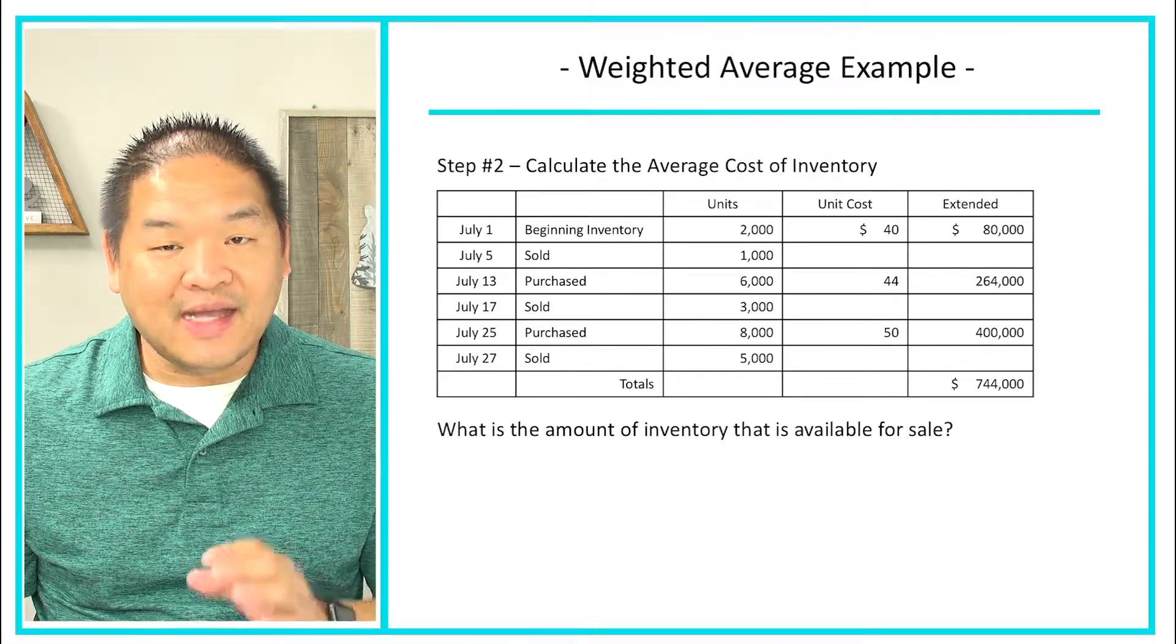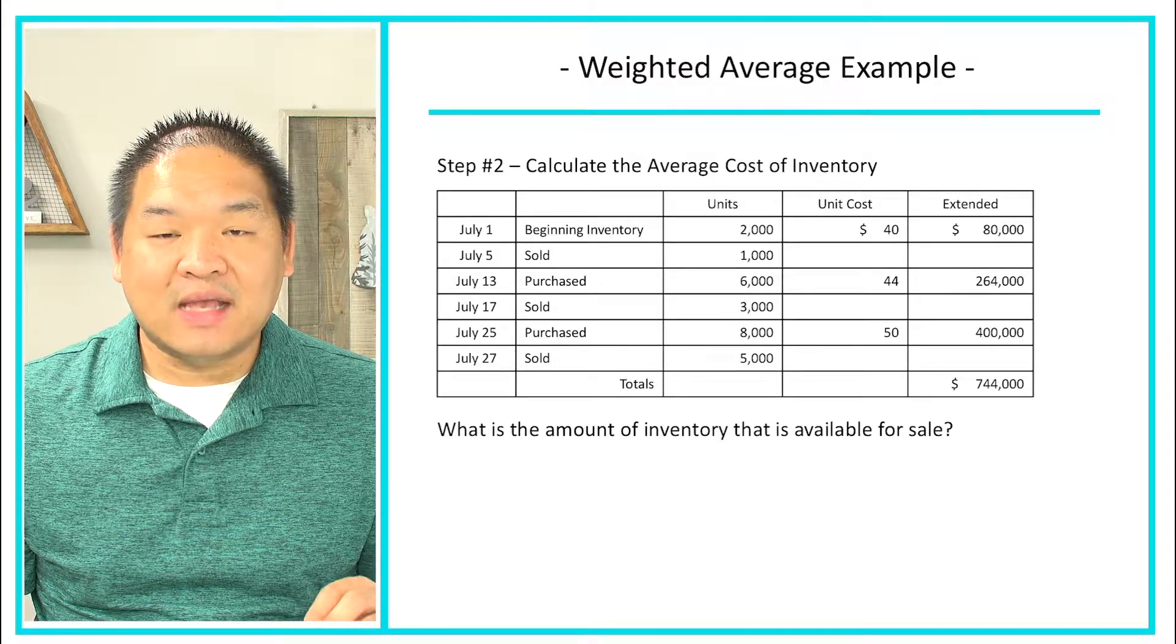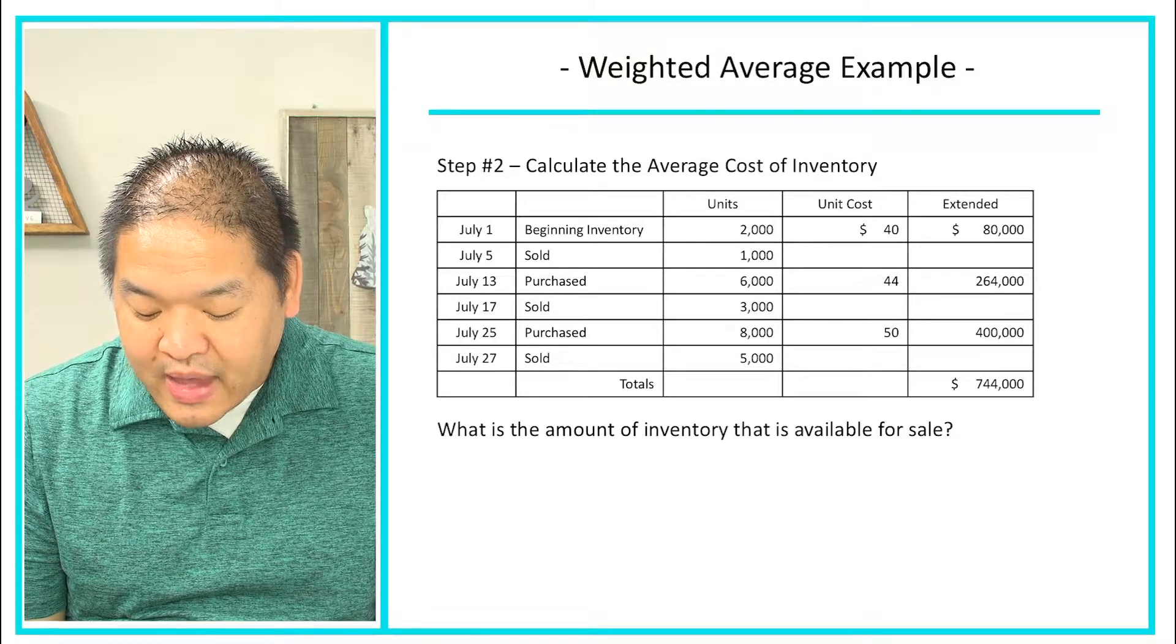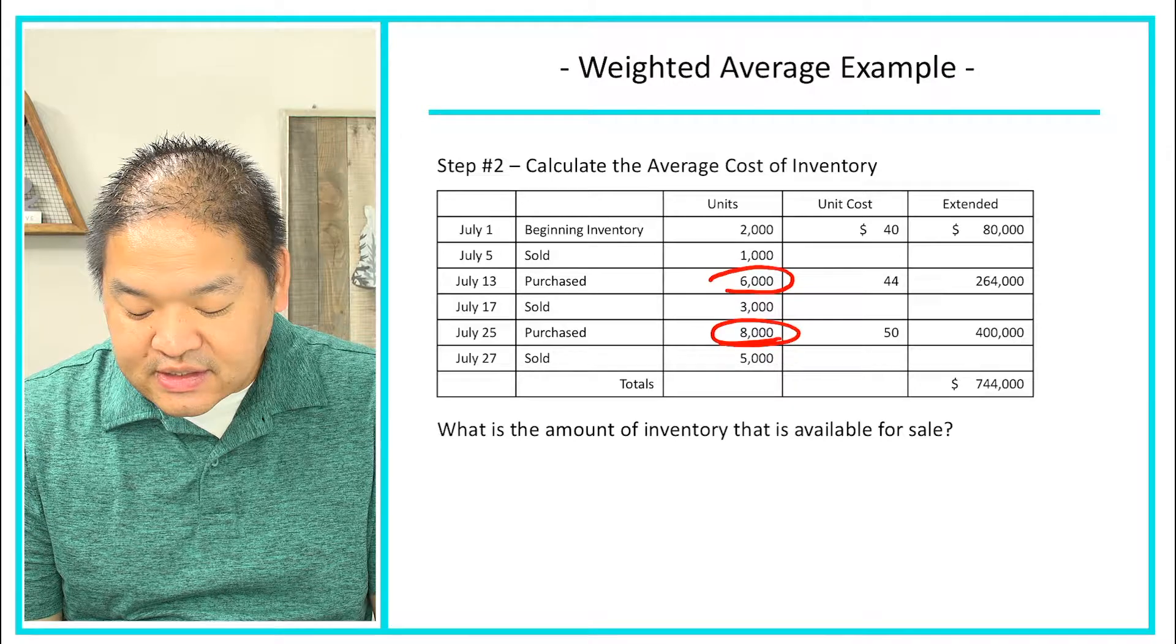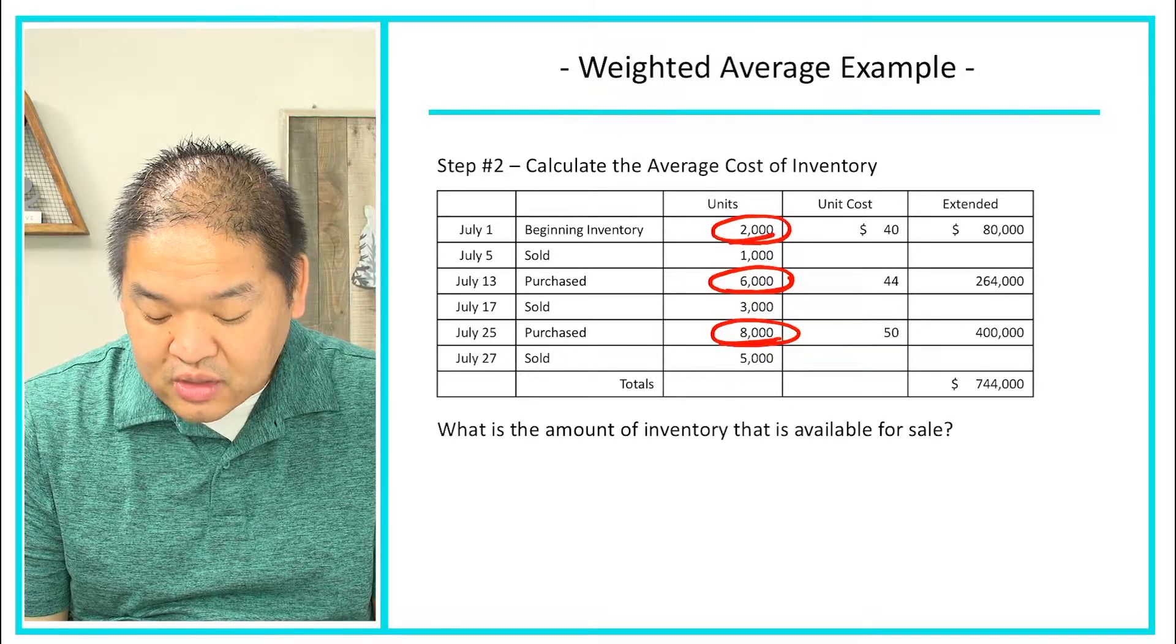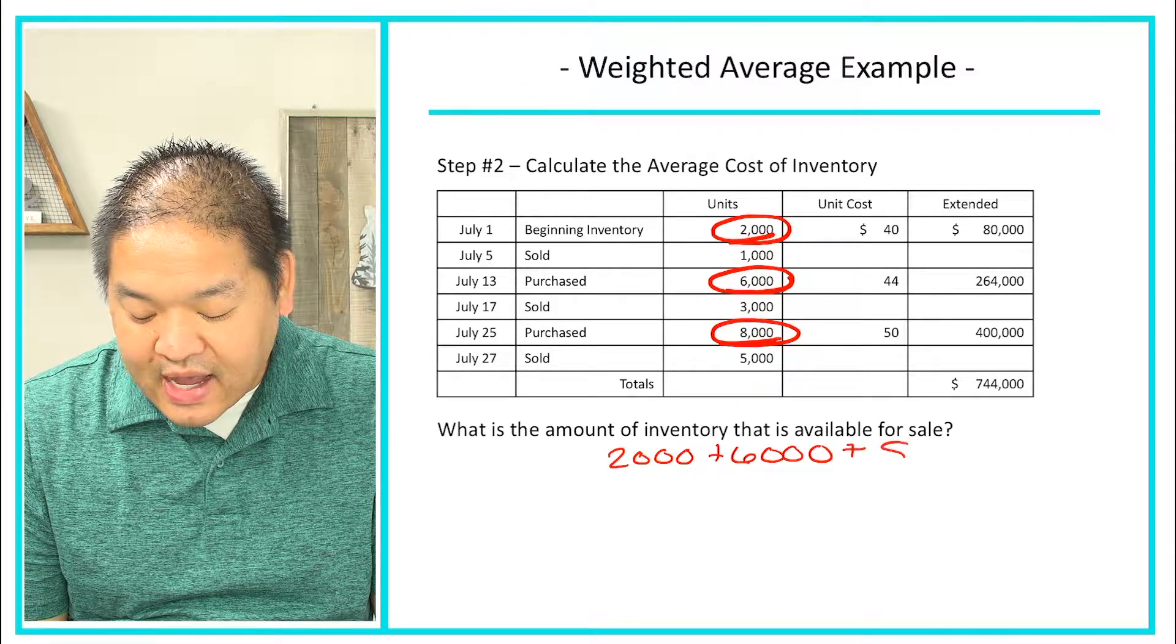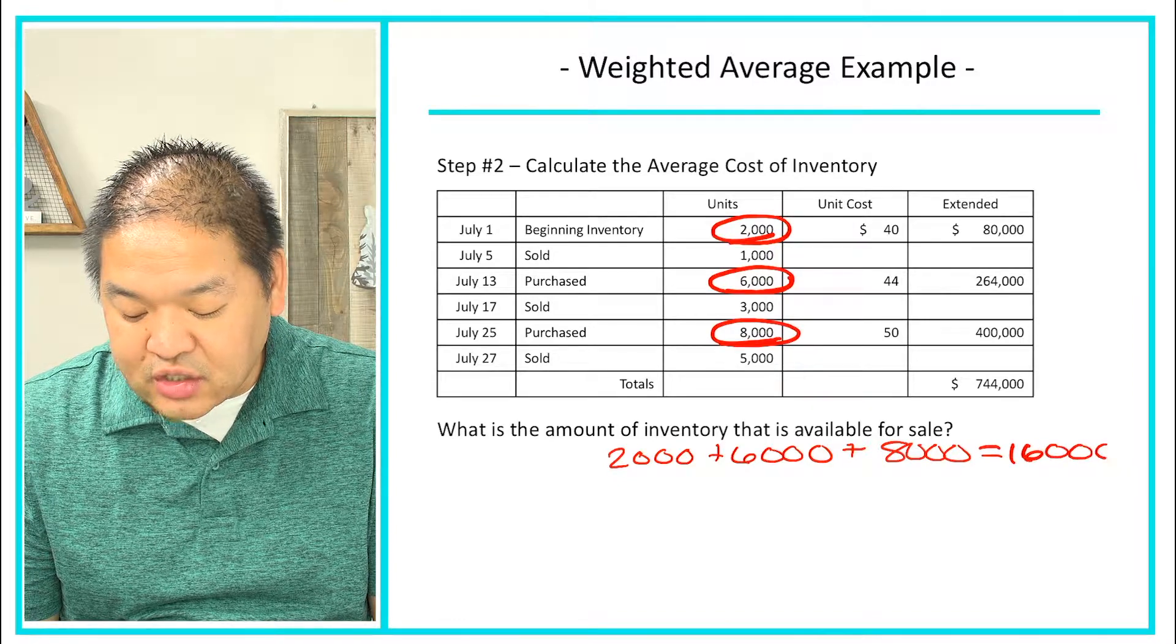So we're going to look at our chart here and yes we did do the calculations from a cost perspective, but now we're going to do that same calculations from a unit perspective. So in this case we have purchases of 8,000, we have purchases of 6,000, and then we have beginning inventory of 2,000. So 2,000 plus 6,000 plus 8,000 gives us 16,000 units.